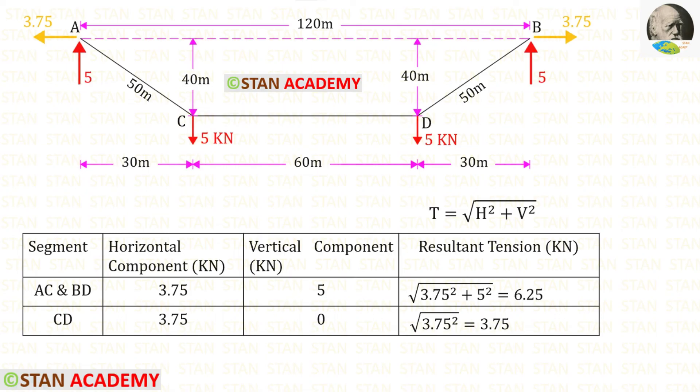Now, let us find the tension in all of the segments. In AC and DB, the tension will be the same. For all of the segments, the horizontal component will be the horizontal thrust 3.75. For AC, the vertical component is the vertical reaction 5. For CD, the vertical component is 5 minus 5, so that it will be 0. Then, using this formula, we can find the tension.